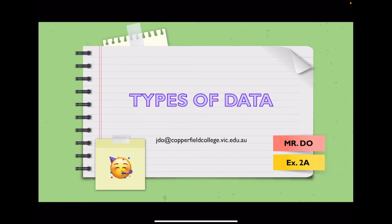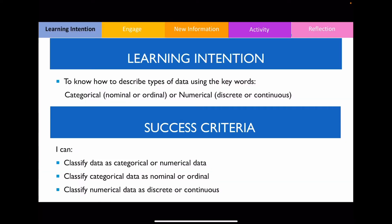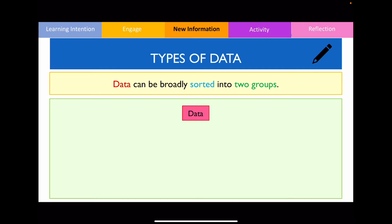Hello class, in this video we're going to be looking at types of data. The learning intention of this video is for us to be able to describe data using the following keywords. Data can exist in many different forms and we can broadly sort them into two main groups, categorical data and numerical data.